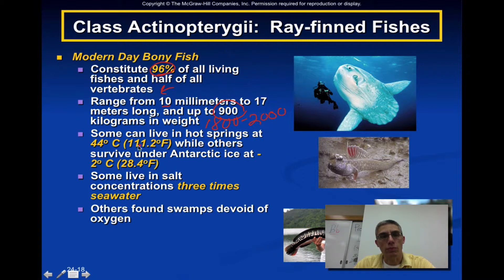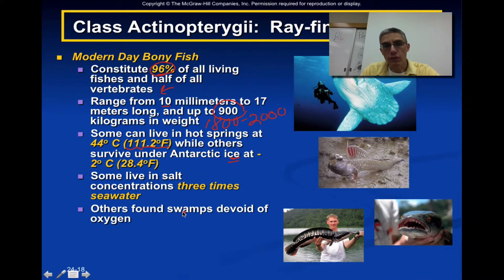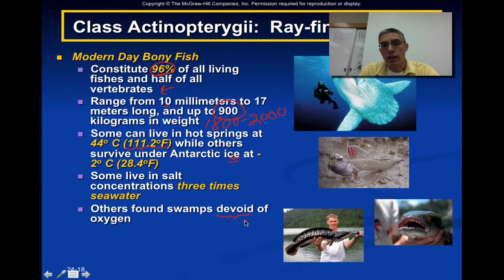Some bony fish can live in hot springs reaching up to 112 degrees Fahrenheit, while others survive under Antarctic ice down to 28.4 degrees Fahrenheit. Some live in salt concentrations almost three times that of seawater, and some are found in areas where the water is devoid of oxygen. Those fish have adapted to actually gulp atmospheric oxygen from the surface and use that to respire.